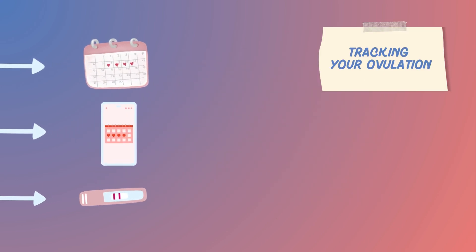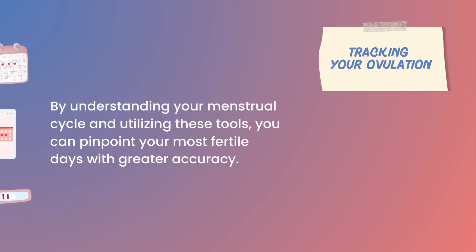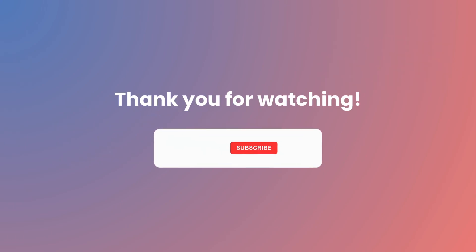How can you effectively track your ovulation? There are numerous methods for tracking ovulation, ranging from simple calendar tracking to more advanced techniques like ovulation prediction kits. By understanding your menstrual cycle and utilizing these tools, you can pinpoint your most fertile days with greater accuracy.